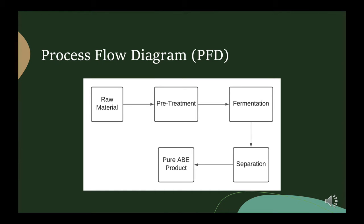Shown here is a process flow diagram of the process for ABE fermentation. Typically, we start with raw material in the form of either lignocellulosic biomass, such as rice bran or corn stover, or raw sugars, such as xylose and glucose. It moves on to a pre-treatment stage where either acid hydrolysis, enzymatic hydrolysis, or size reduction takes place in order to make the raw material more suitable for fermentation.